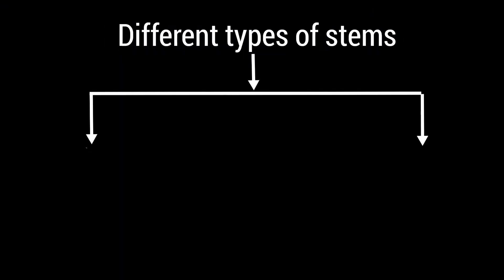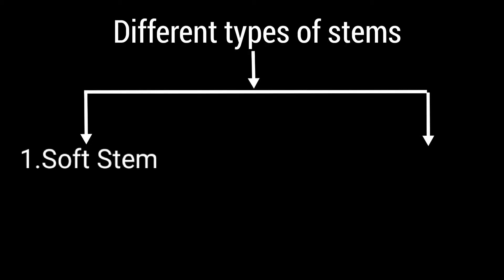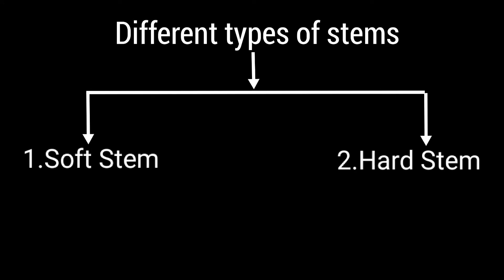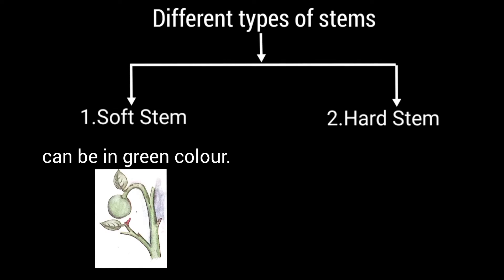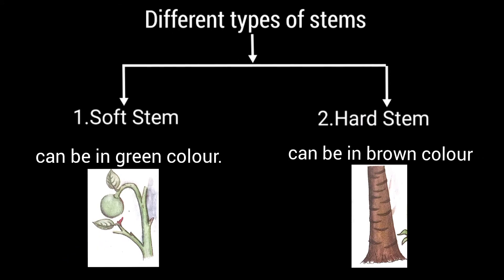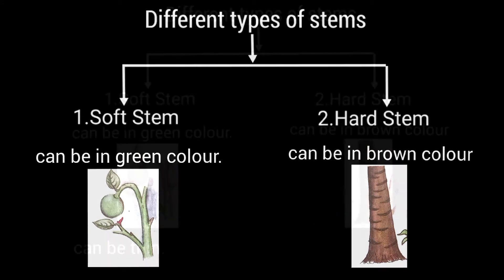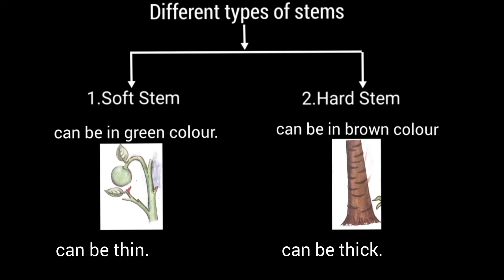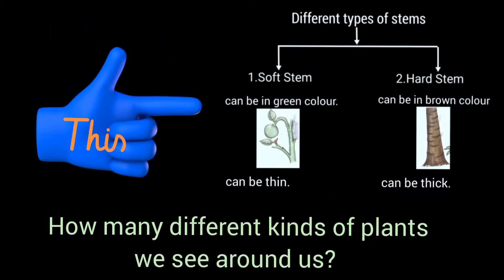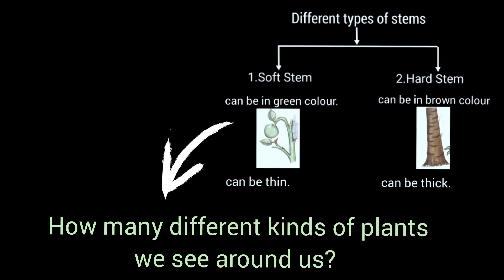There are mainly two different types of stems. The first one is soft stem and the second one is hard stem. The soft stem can be green in color, whereas the hard stem can be brown in color. Soft stems can be thin, whereas hard stems can be thick.